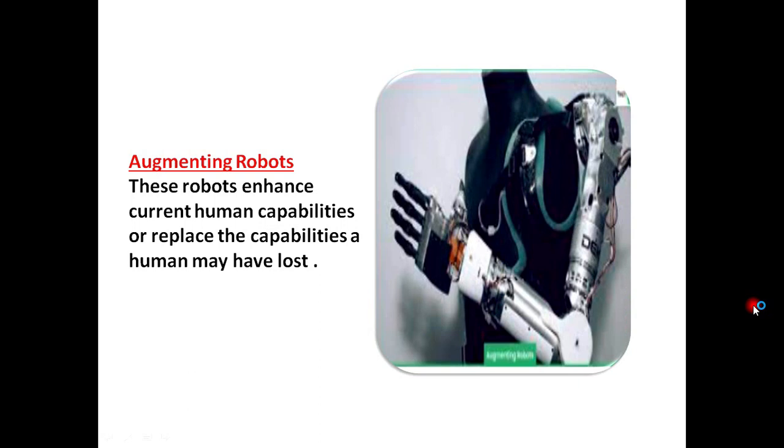Augmenting robots. These robots enhance current human capabilities to replace the capabilities human may have lost. You can find out that these robots replace the capabilities. You can see these kind of robots work like your real body part. These kinds of robots are called augmenting robots and you can see here in a picture that is described and the same thing is present in the definition. You can find out that these robots replace the capabilities of a human may have lost.